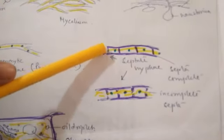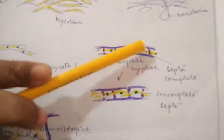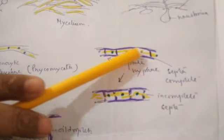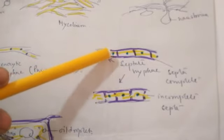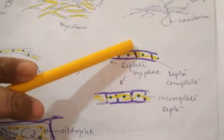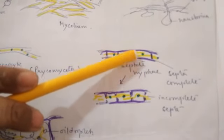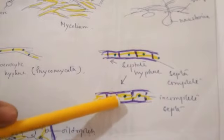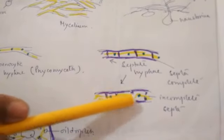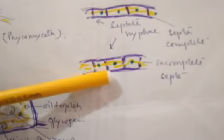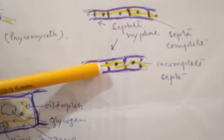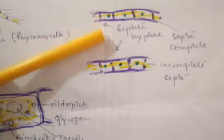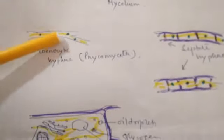In higher groups of fungi, the nuclei are separated by cross walls called septa — these are called septate hyphae. Septa may be complete, meaning continuous from one end to the other, or discontinuous (incomplete), especially in basidiomycetes, where there are gaps in between through which materials can move from one cell to another easily.